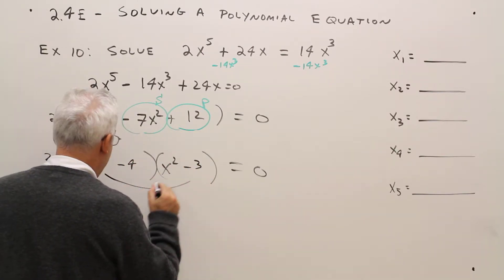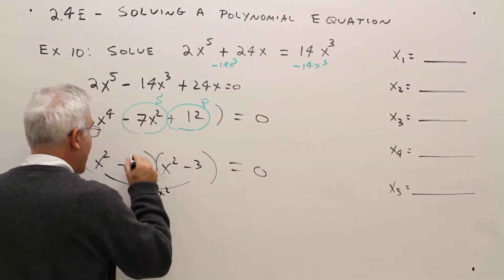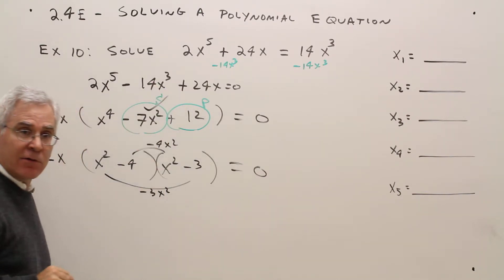I'll do a quick OI check. Minus three x squared. Minus four x squared. Checkers.